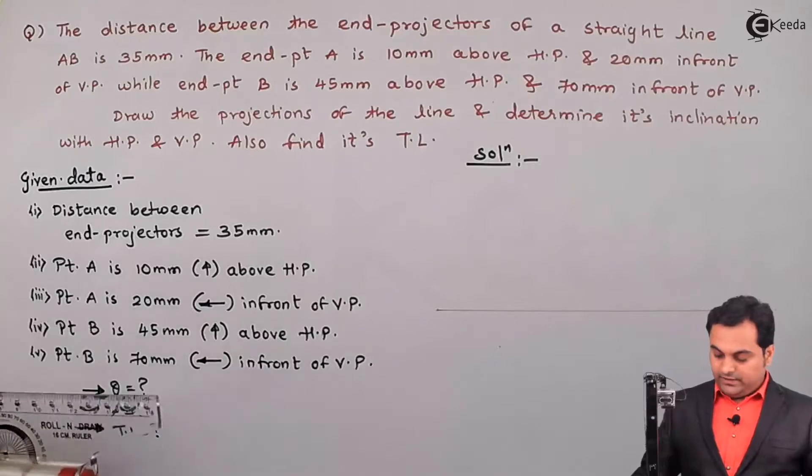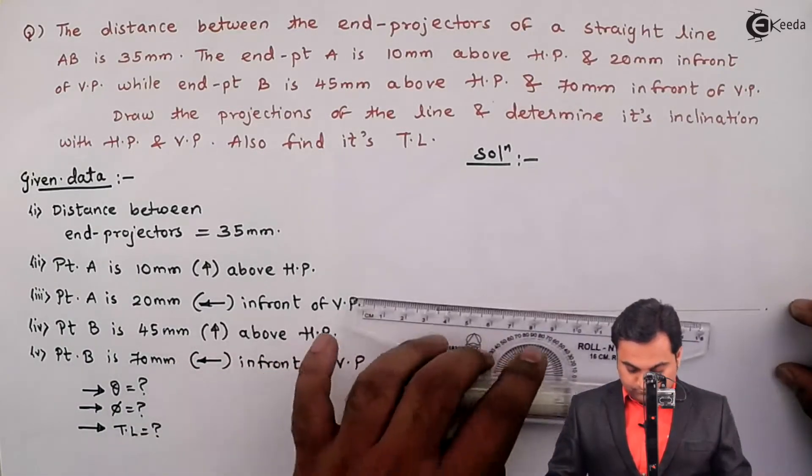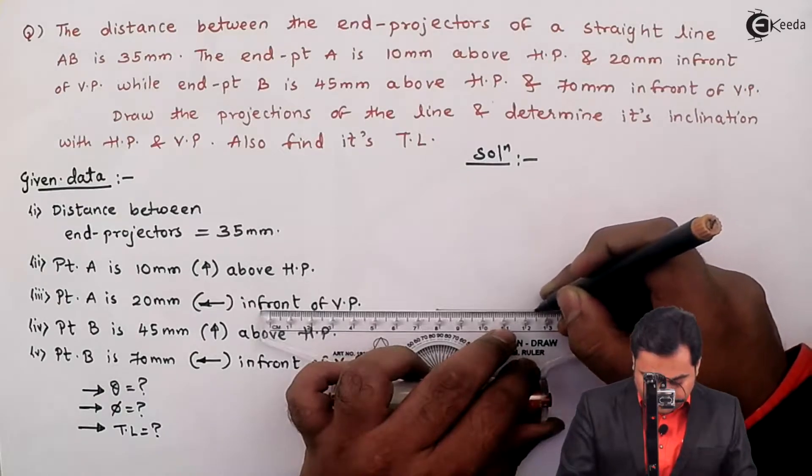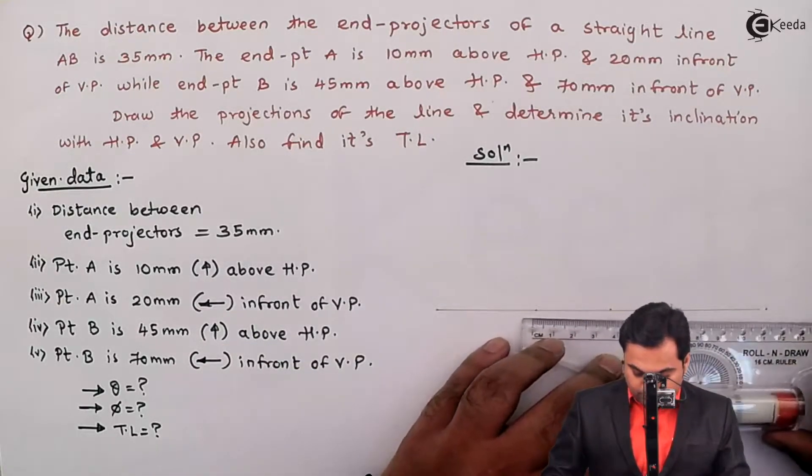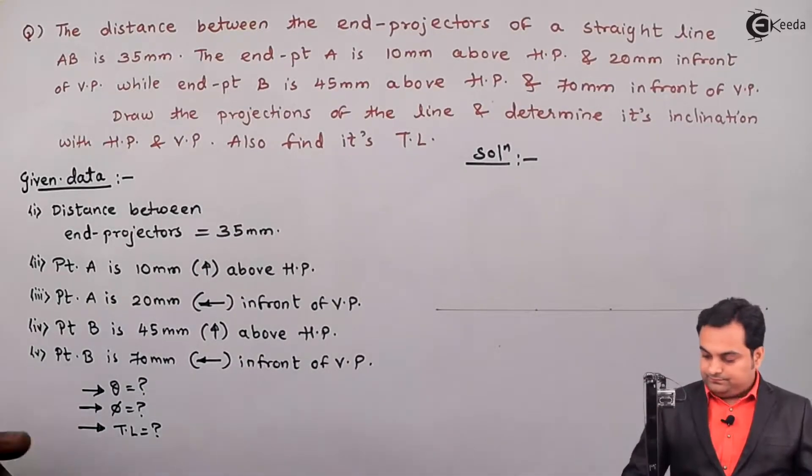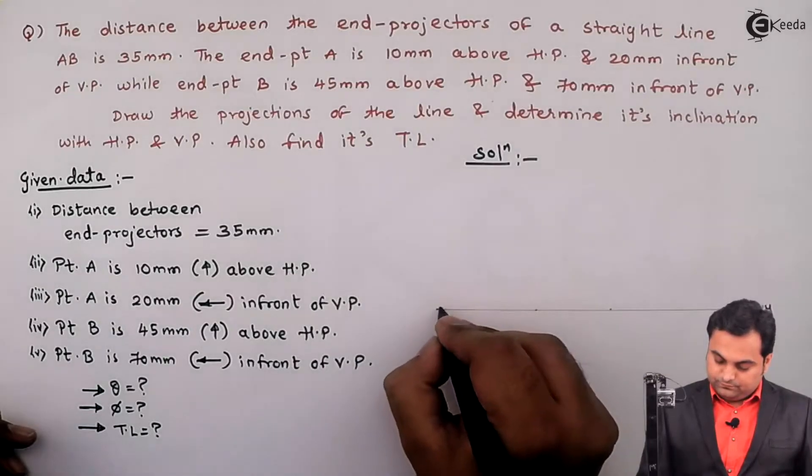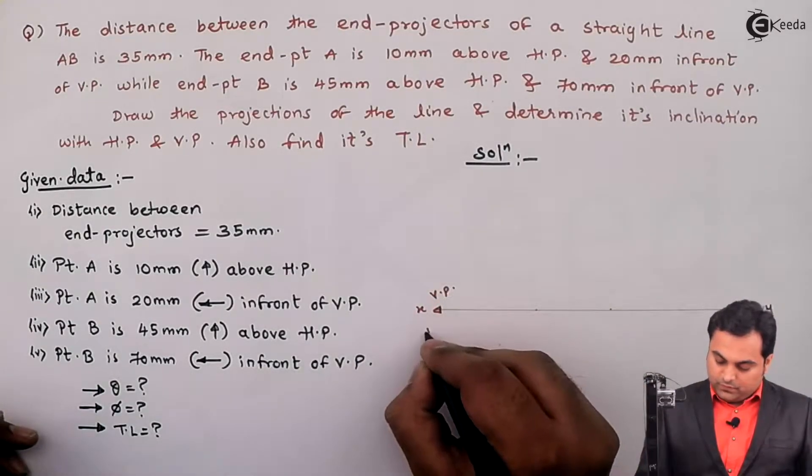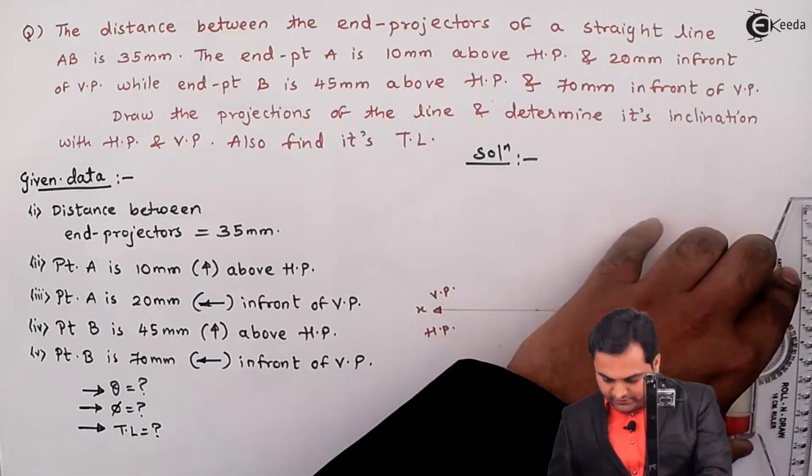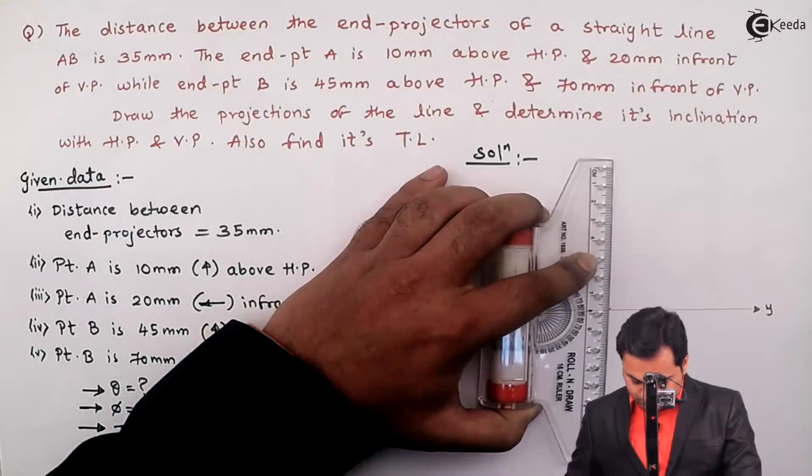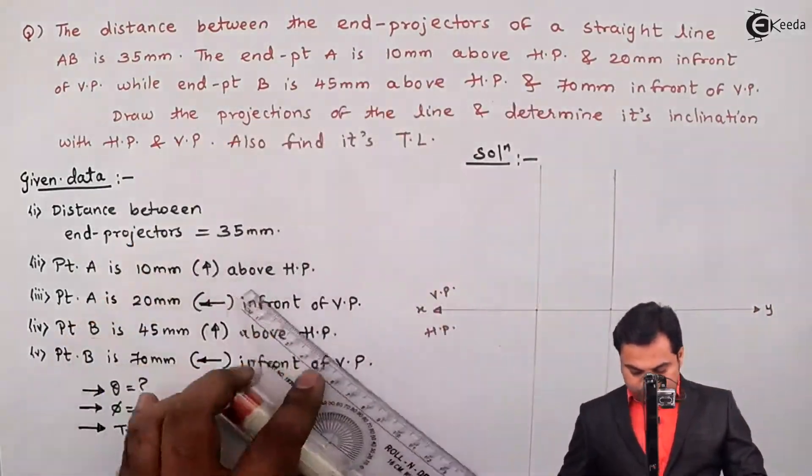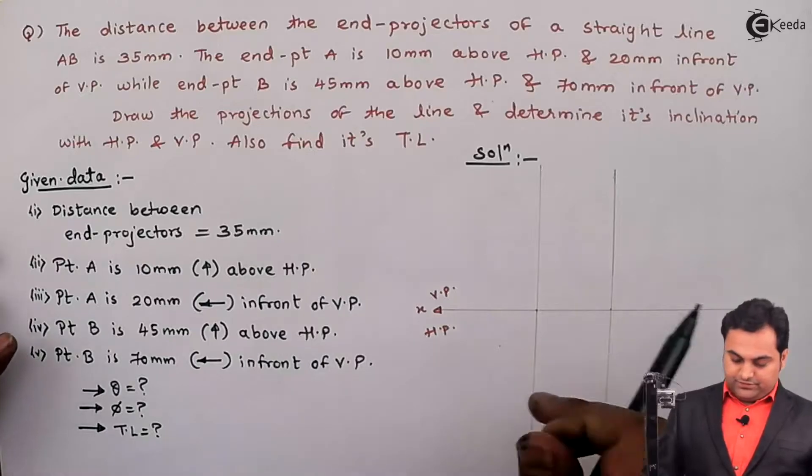Drawing a light horizontal line. Now at first I'm marking 35 mm over here and then this is the XY line VP HP. After marking this 35 mm, I'll draw vertical lines through these points. So that is the distance between end projectors which is 35 mm given.